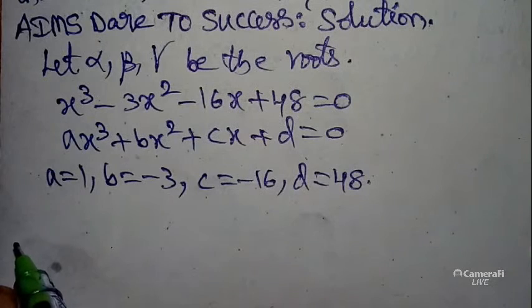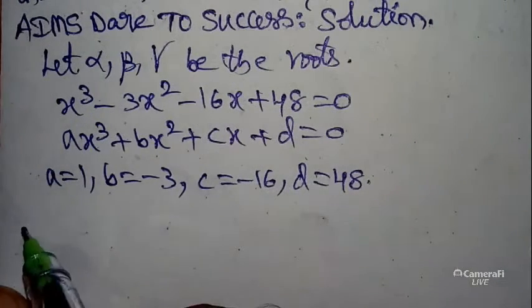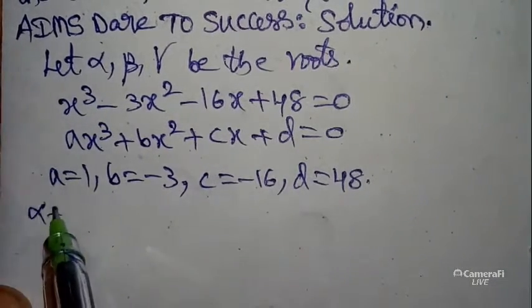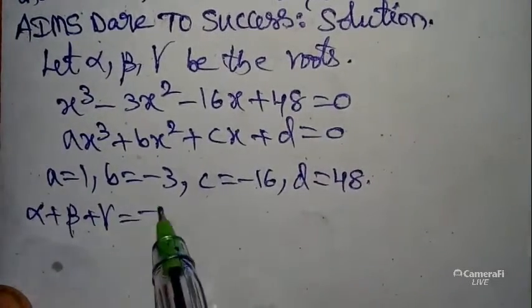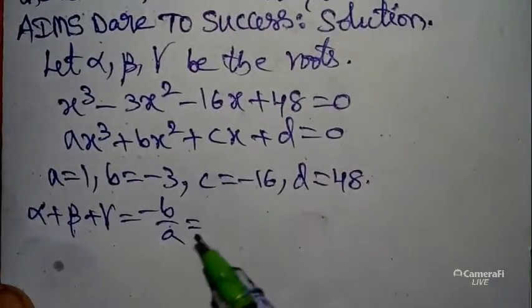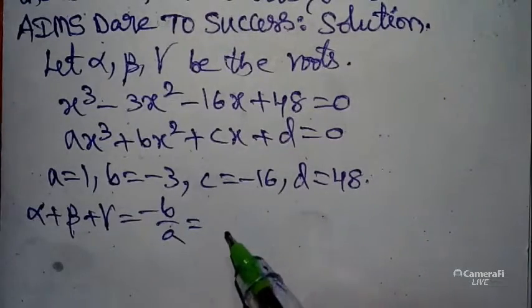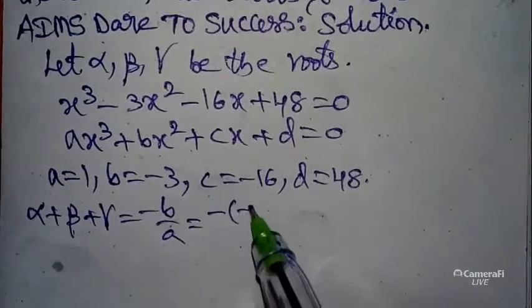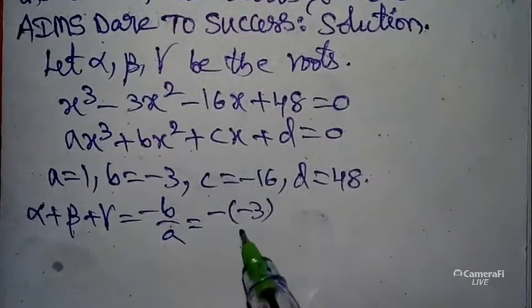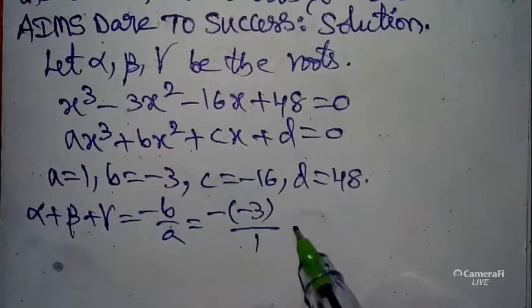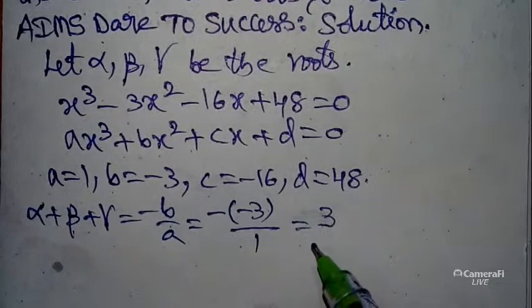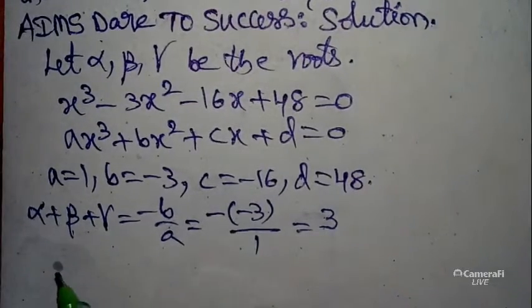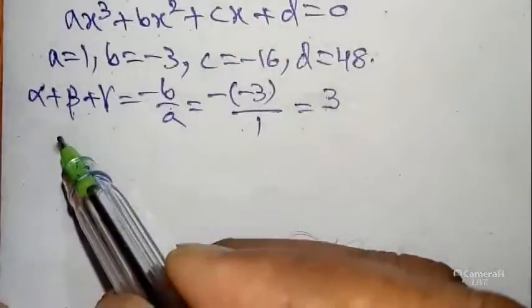We will use two formulas. Number one: sum of the roots — alpha + beta + gamma = -b/a. Here, -b/a = -(-3)/1 = 3. So alpha + beta + gamma = 3.